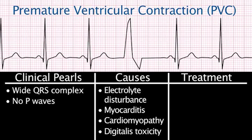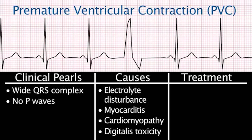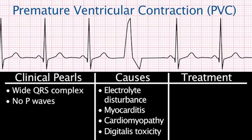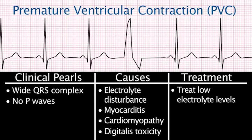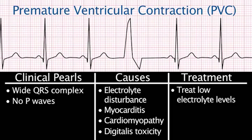Treatment: The occasional premature ventricular contraction or PVC does not require treatment. Treat low electrolyte levels such as potassium or magnesium when indicated.